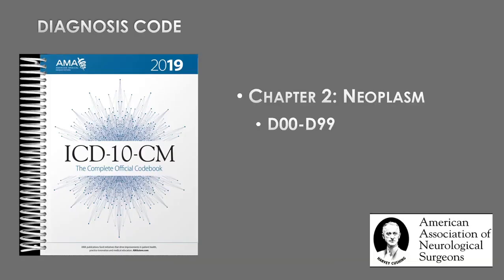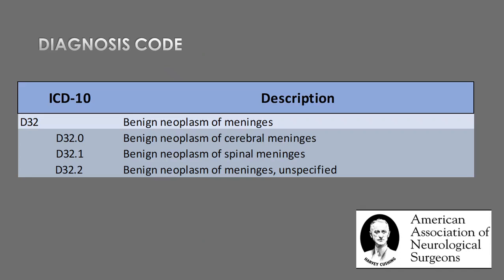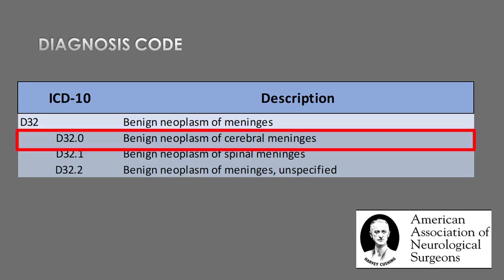We will first assign a diagnosis code for this lesion utilizing the ICD-10 book from the American Medical Association. The appropriate code is found in the second chapter, which deals with neoplasm. The D32 codes deal with benign neoplasms of the meninges. The D32.0 code, which is specific for a benign neoplasm of the cerebral meninges, will be utilized in this circumstance.